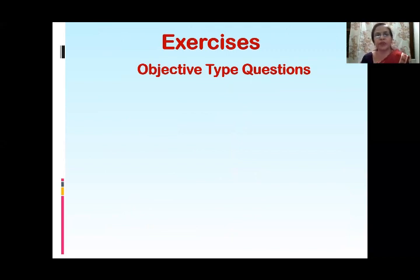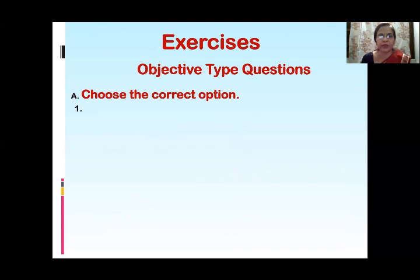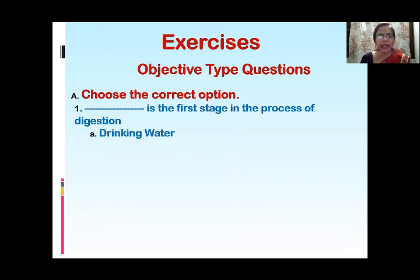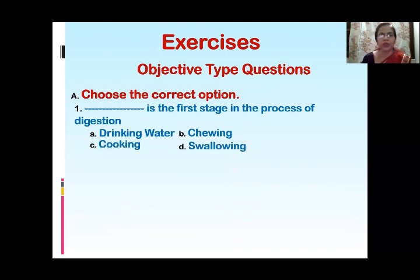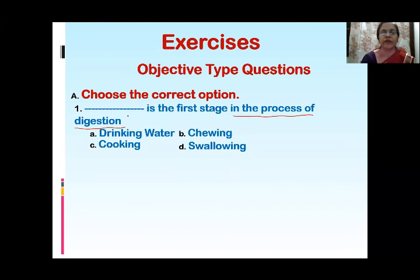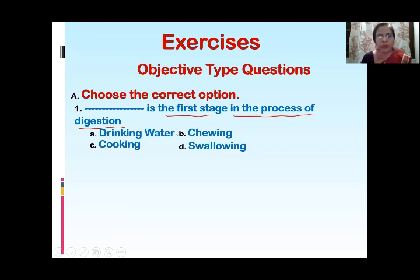First is objective type questions. Question number 1: choose the correct option. Dash is the first stage in the process of digestion. The options are: drinking water, chewing, cooking, and swallowing. In the process of digestion, the first stage — you know that digestion starts from the mouth only. So the correct answer is obviously chewing.